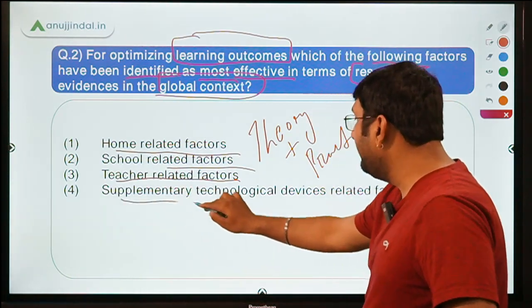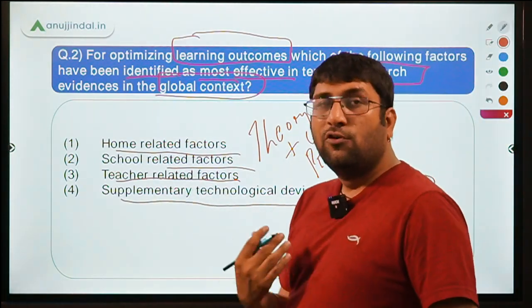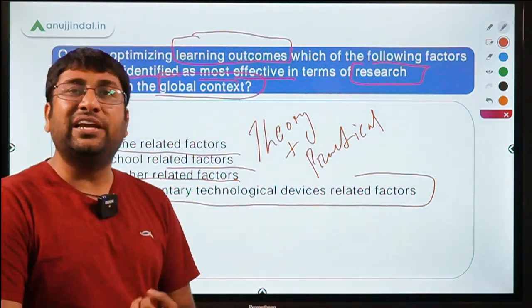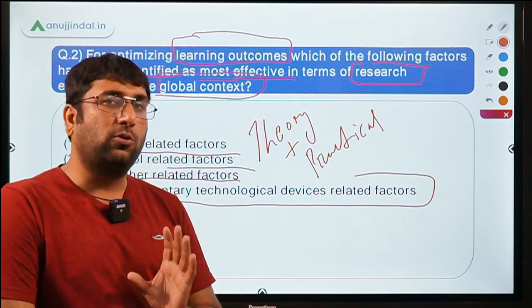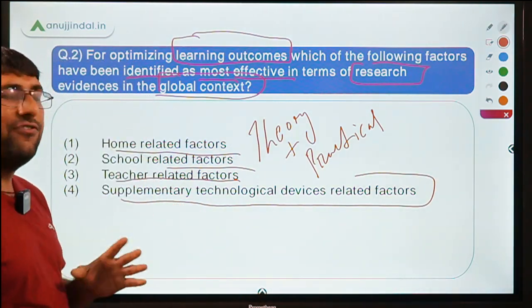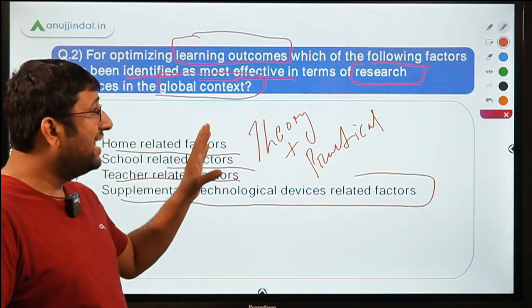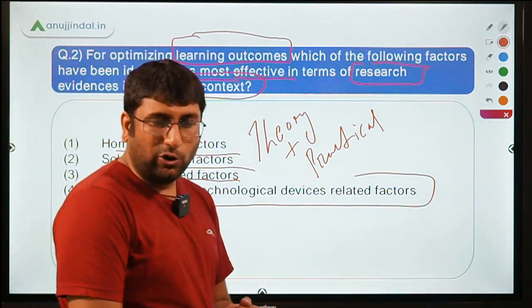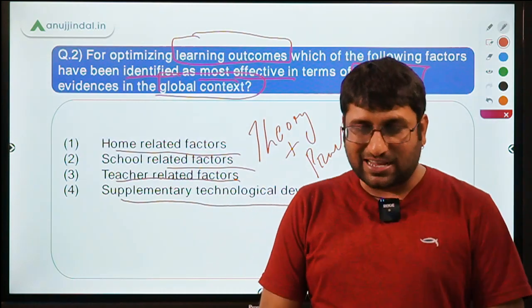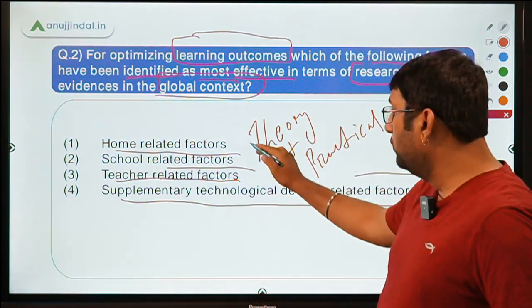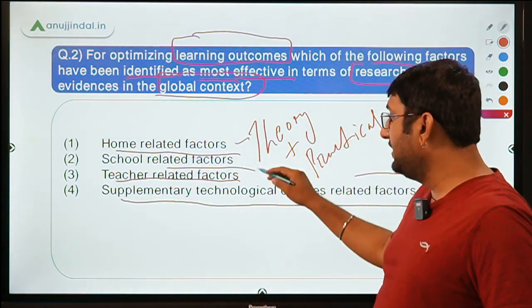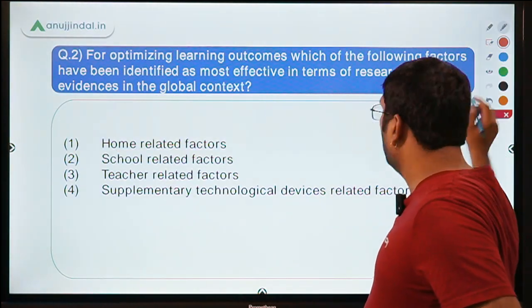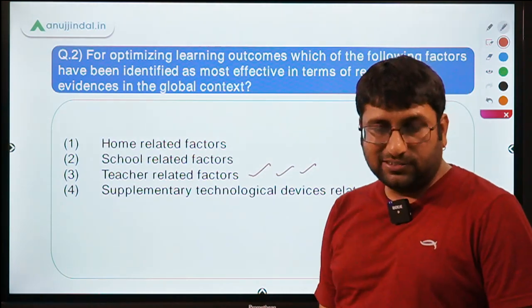Option D: supplementary technological devices — such as audio-video tools and graphs used as teaching aids, which boost teaching effectiveness. All four factors are important. But based on research evidence, we need to identify the most important factor. There are some mixed answers — some say home-related, some say school-related — but the majority answers are coming for teacher-related factors.